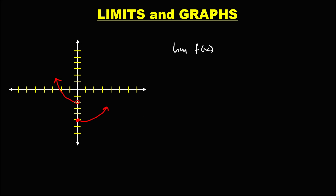For this graph, to find the limit of f(x) as x approaches 0 from the left and from the right: for the right side limit, x approaches 0 from the right, and the limit is equal to negative 5.